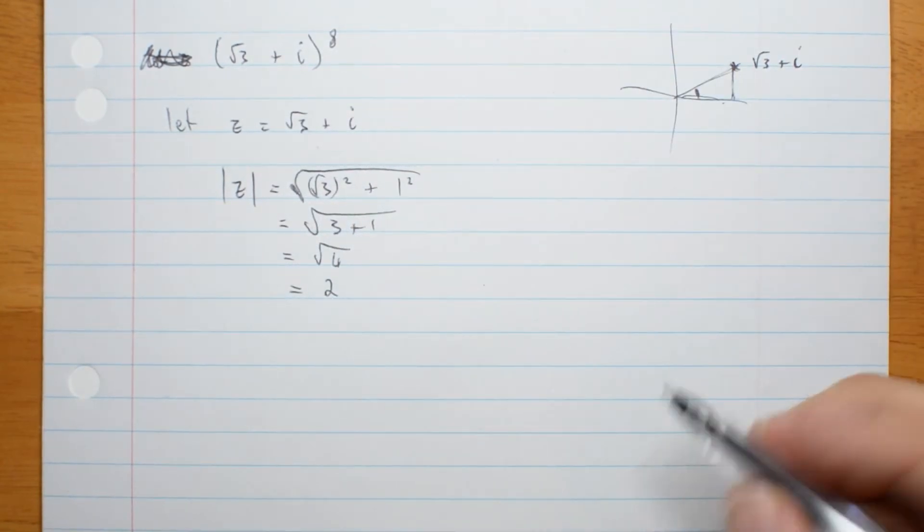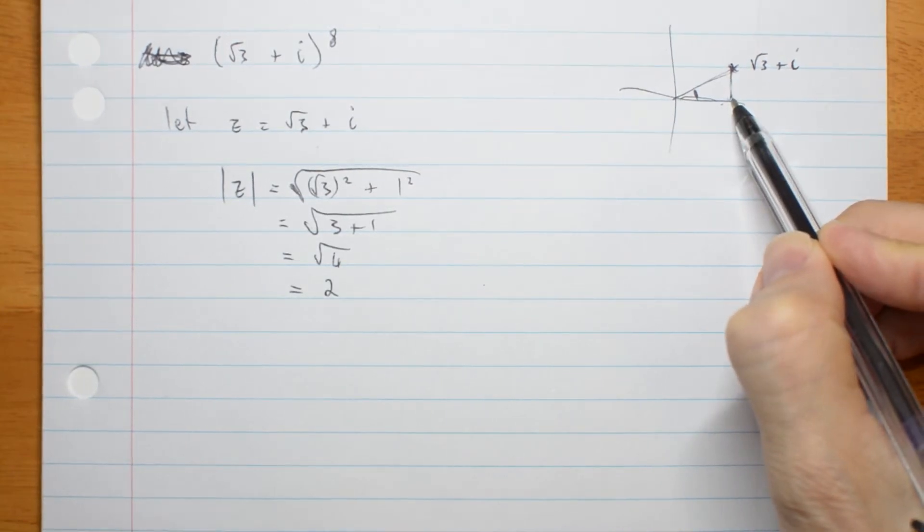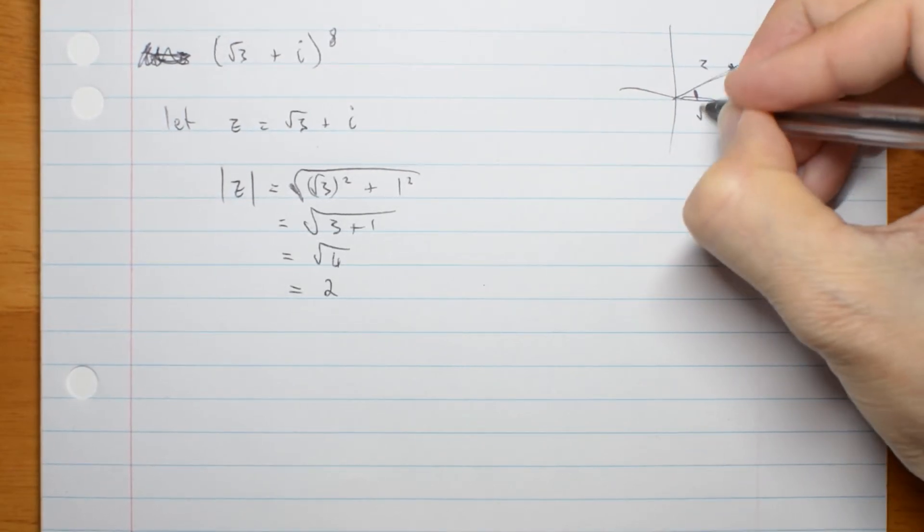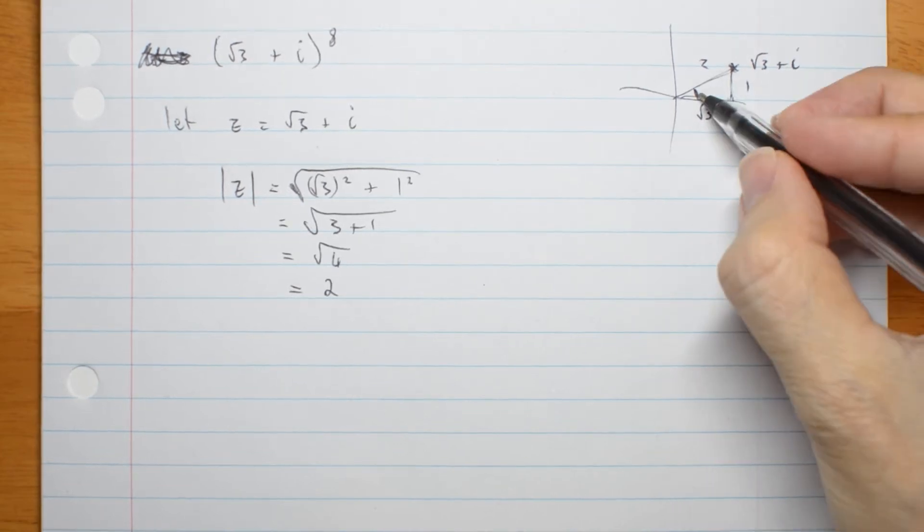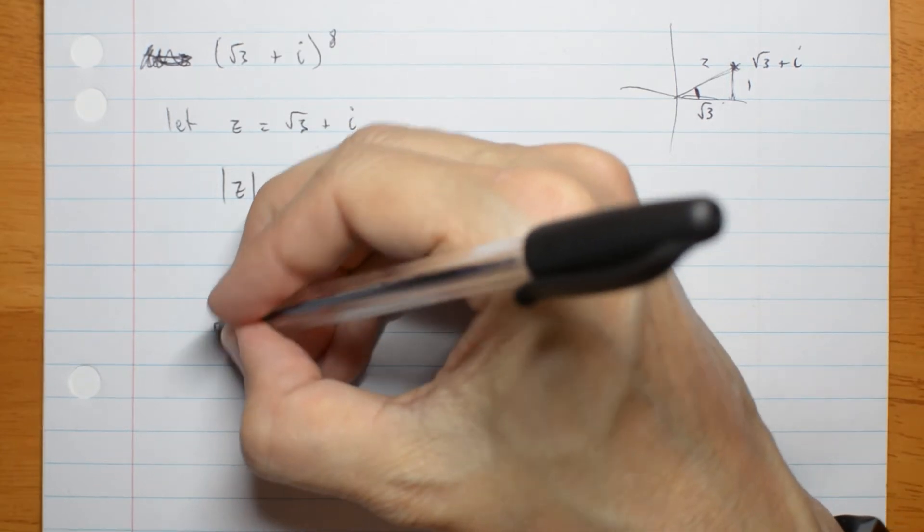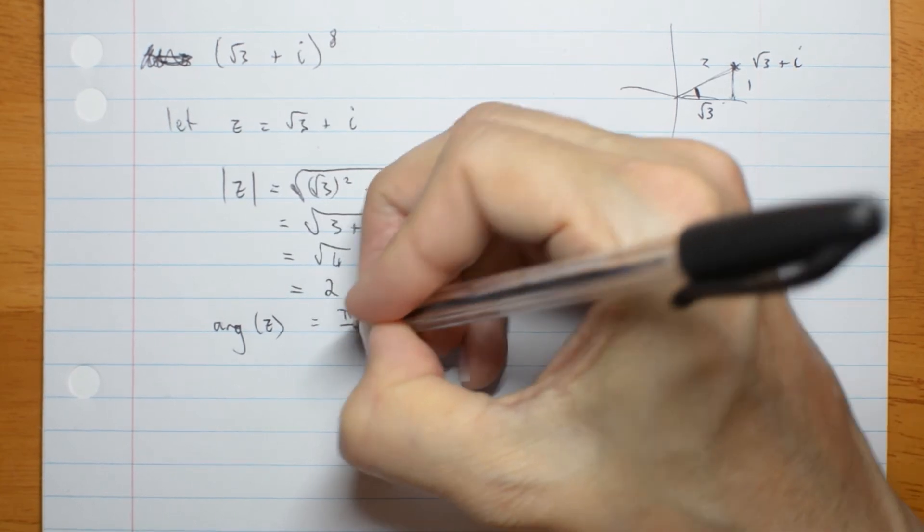Did you notice, we actually had a 1, 2, root 3 triangle hiding here? That's important because if it is a 1, 2, root 3 triangle, I know what this angle is. This angle must be 30 degrees or pi on 6. So arg of z is pi on 6.